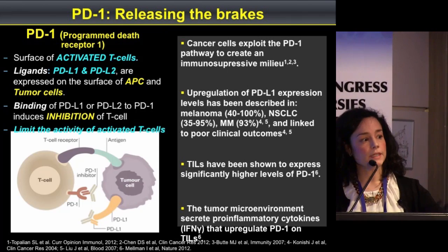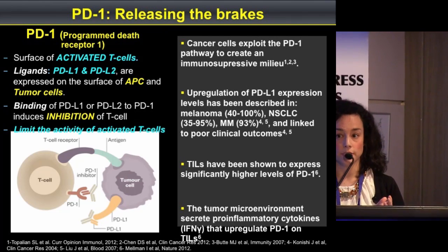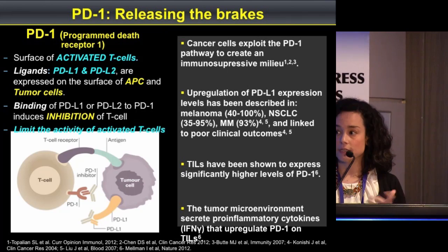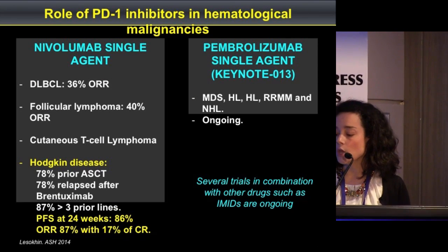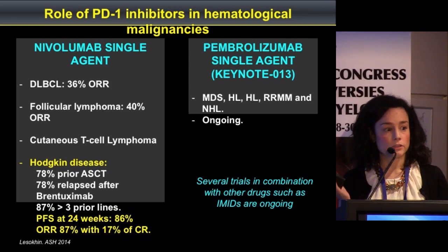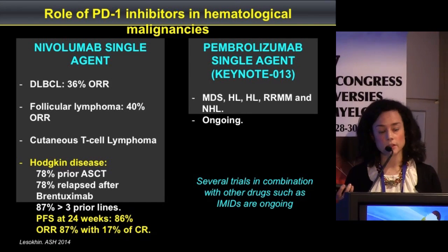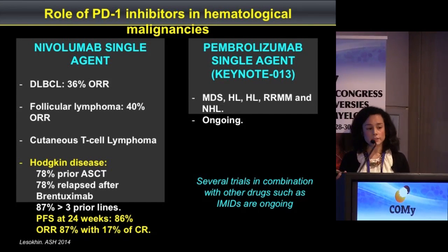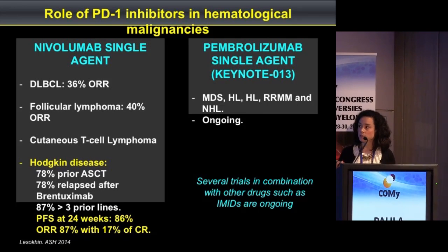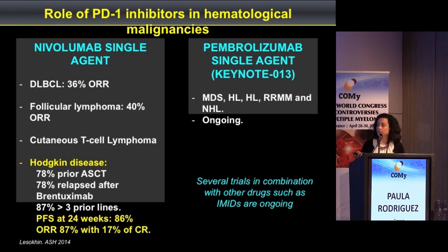So we end up with a lot of PD-L1 on the tumor cell and a lot of PD-1 on the surrounding lymphocytes, and these lymphocytes become inactivated. Regarding clinical data on PD-1 blockade in hematological malignancies, these are the results of a phase 1 trial using nivolumab as a single agent. The overall response rate was around 40% in lymphoma patients — both diffuse large B-cell and follicular lymphoma — and an impressive 87% overall response rate in heavily pretreated Hodgkin disease patients.